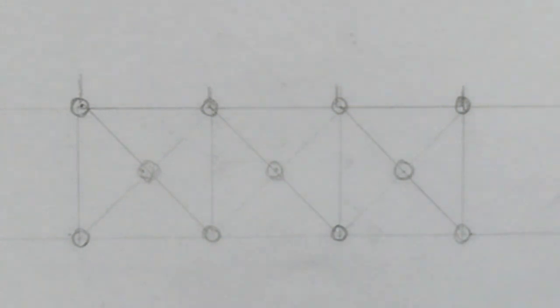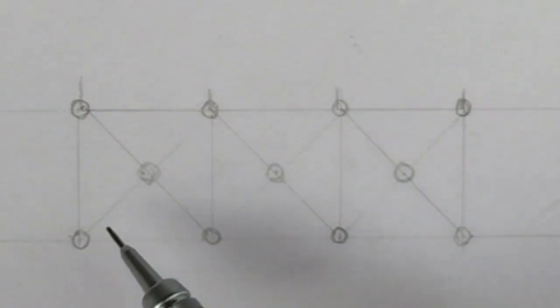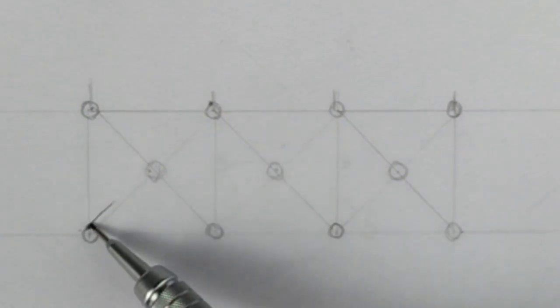Lines for knotwork are mostly at 45 degrees. Each line that starts at the top of a circle finishes at the top of the circle 45 degrees from it.